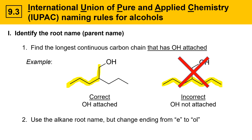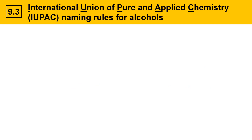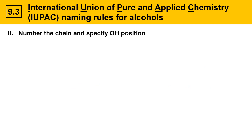Once you've identified the longest carbon chain, use the alkane root name but change the ending from -e to -ol. This structure, if it were an alkane, would be named pentane. So we remove the -e at the end and change the name to pentanol. The parent name, or root name, for this molecule is pentanol.